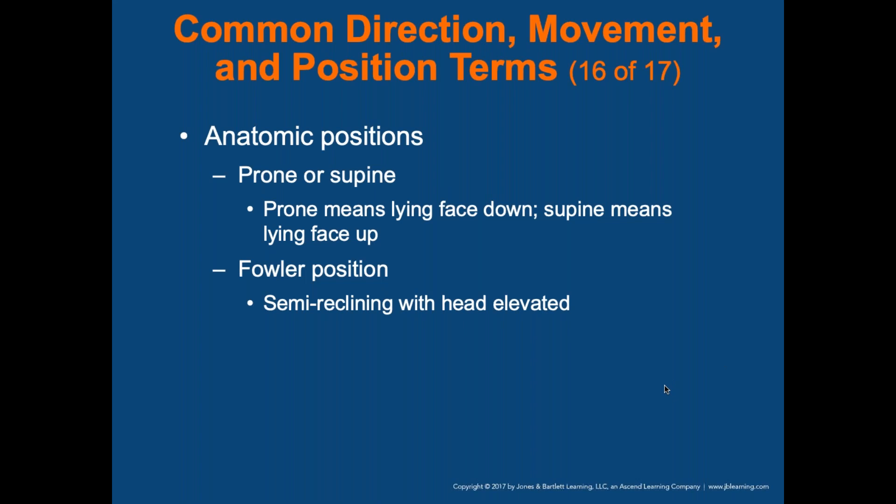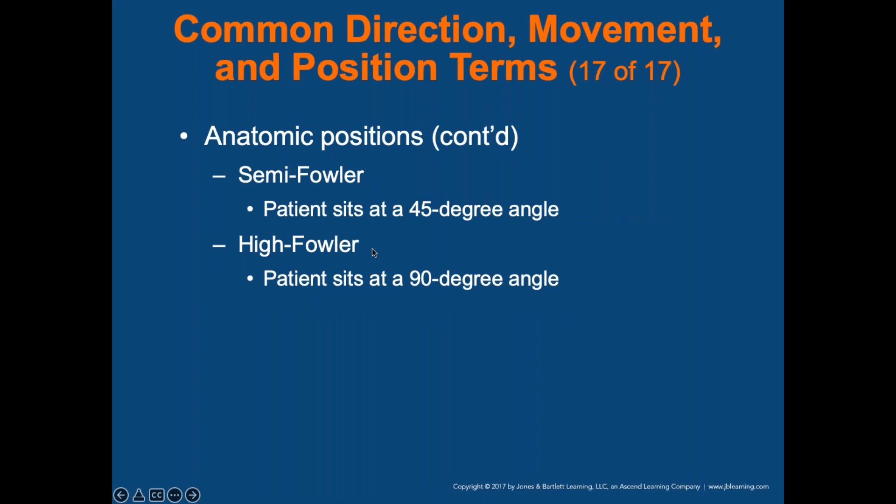The Fowler's position is also semi-reclining with the head elevated to help the patient breathe easier and control the airway. A patient sitting upright is in the full Fowler's position. The semi-Fowler is about 30-40 degrees, while the Fowler or high-Fowler position is at 90 degrees. For respiratory patients, we put them in the Fowler position because no one with breathing issues wants to lie down.